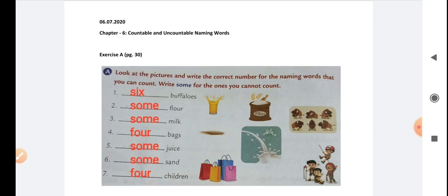In this chapter today, we are going to cover how to differentiate the naming words for their countability and for the ones which we cannot count. If we can count them in numbers, those nouns are countable naming words, and which we cannot count are uncountable naming words.